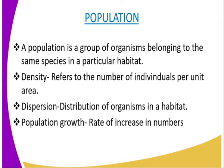The following are some characteristics of populations. The first characteristic is density, which refers to the number of individuals per unit area — for example, around 50 antelopes per square kilometre. The second characteristic is dispersion, which is the spread or distribution of organisms in a habitat. The third characteristic is population growth, which refers to the rate of increasing numbers. Population growth rate may be influenced by factors such as food availability, space, and diseases.